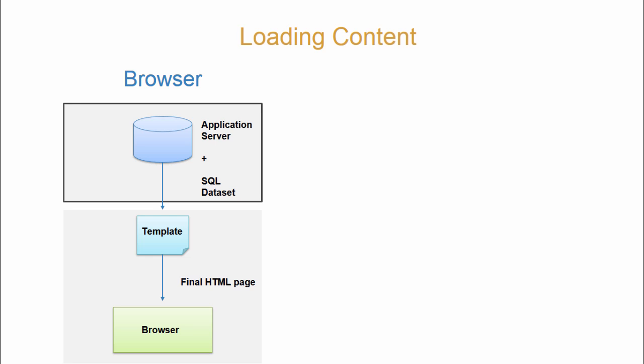One big difference between Angular based sites and traditional ones is that Angular expects the browser to build the page. In this diagram, the server sends the browser all of the data to build the page, which includes the HTML, CSS, and JavaScript files, and then the browser does the work of building the final template that's displayed in a web page.